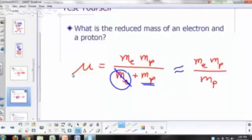How can we simplify this? Mass of proton cancels out. So the reduced mass of an electron and a proton is essentially the mass of the electron.